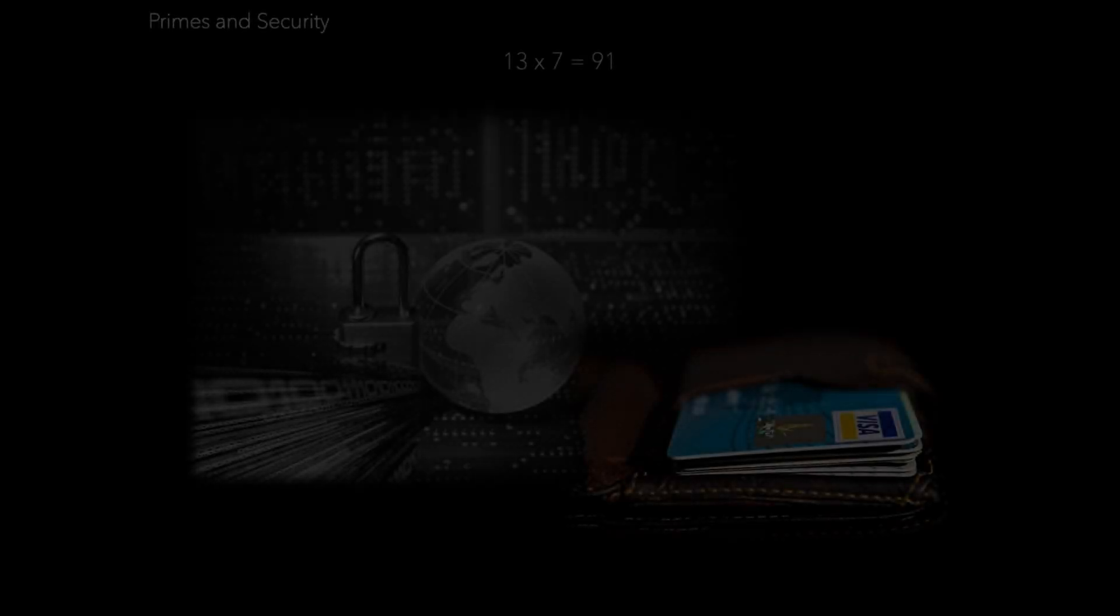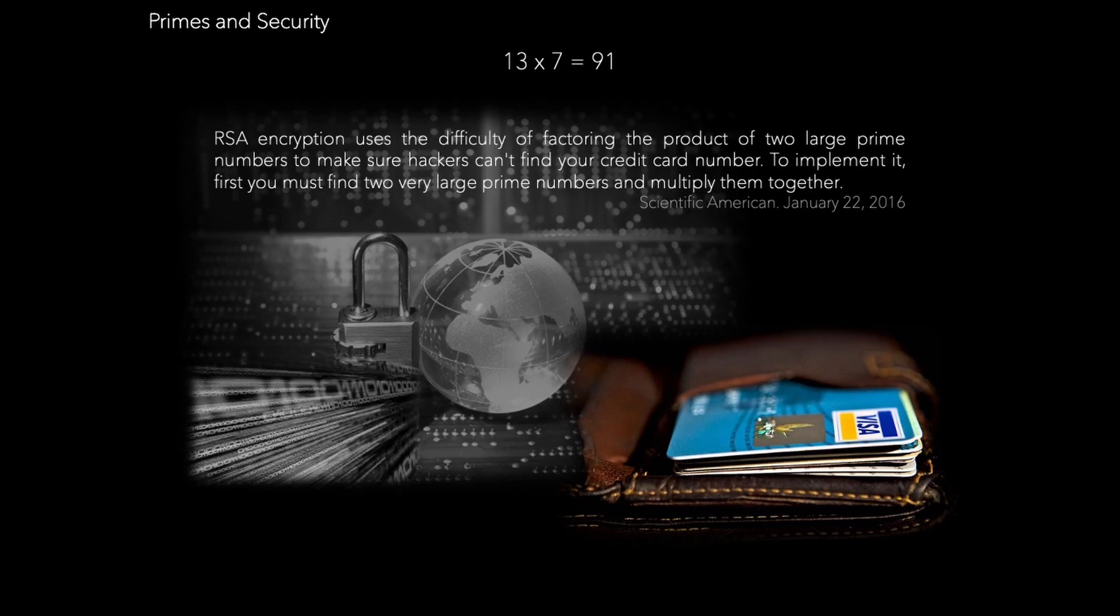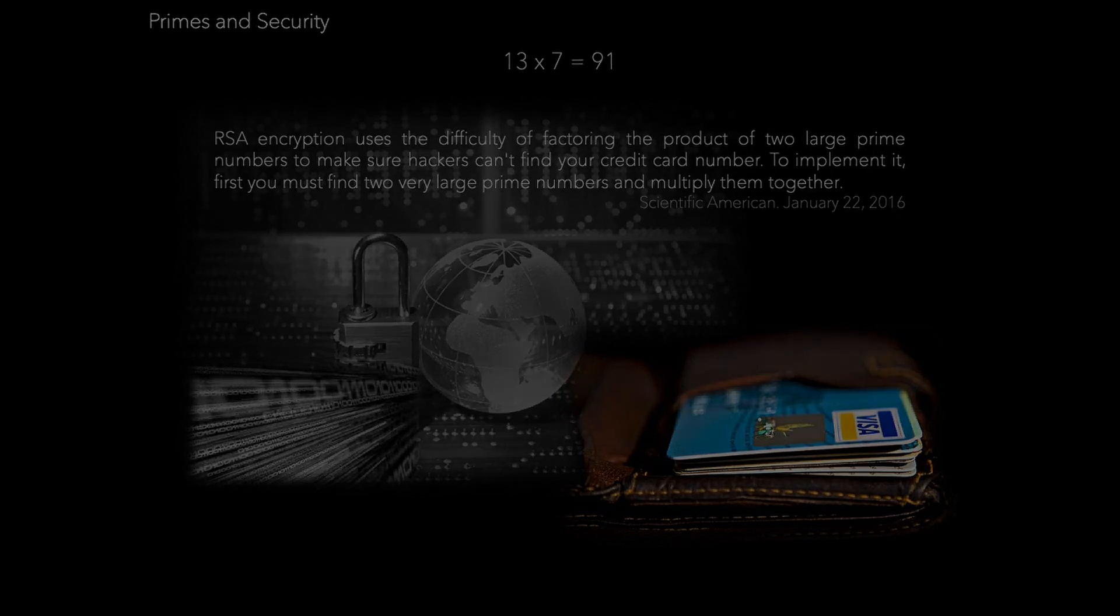To understand the significance of this discovery, let's briefly touch on why prime numbers are so crucial in our modern world. Take a simple example, 13 times 7, two primes, that equals 91. Now imagine those two numbers being hundreds of digits long, and suddenly factoring the result becomes an immense challenge, one that forms the backbone of RSA encryption protecting everything from your online banking to your private messages. This difficulty in factoring large primes is what keeps our digital world secure. But what if we could understand the very nature of primes themselves?